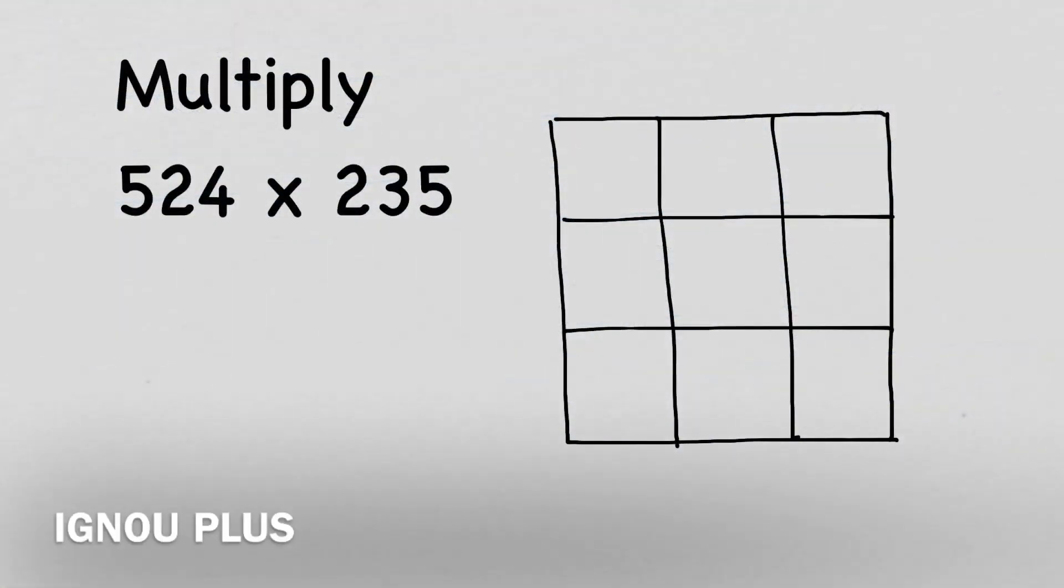First of all, we have to write these numbers on the edges. Let's see what is the process. The first number is 524 and the second number is 235. We can write them on the edges.